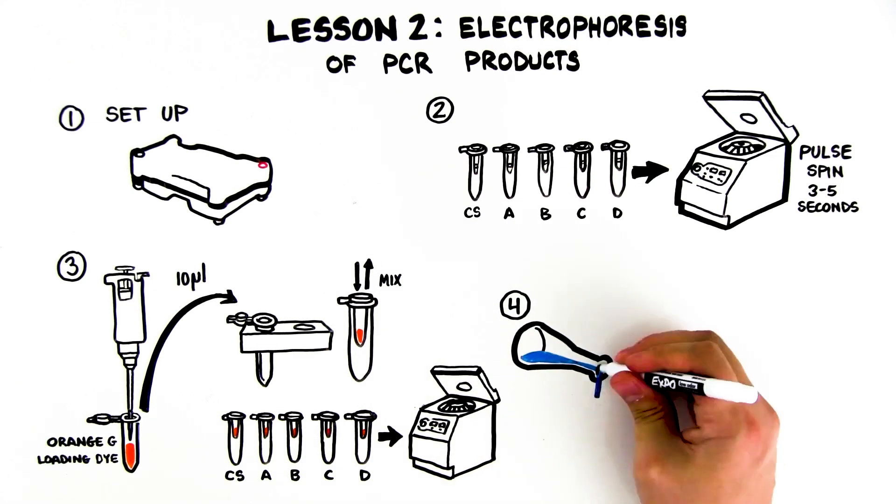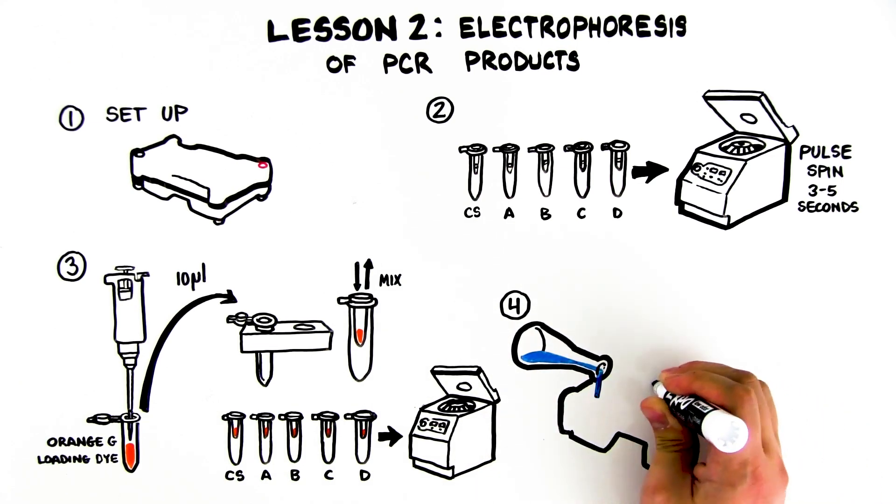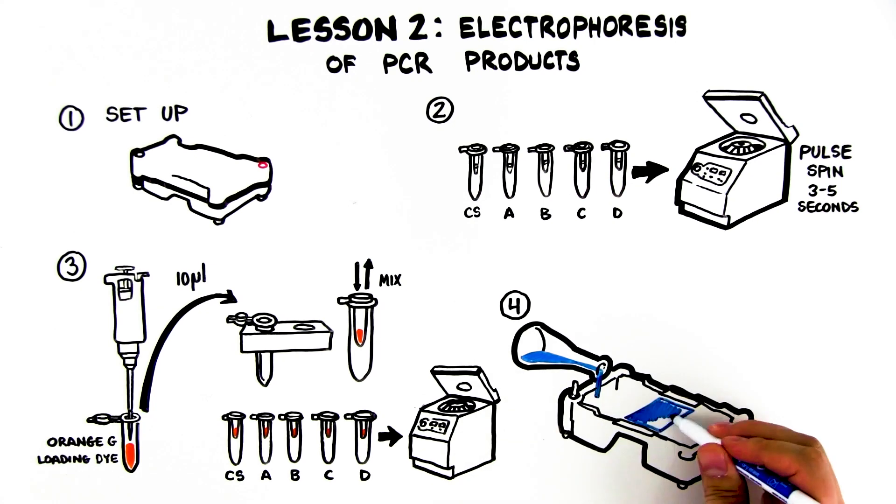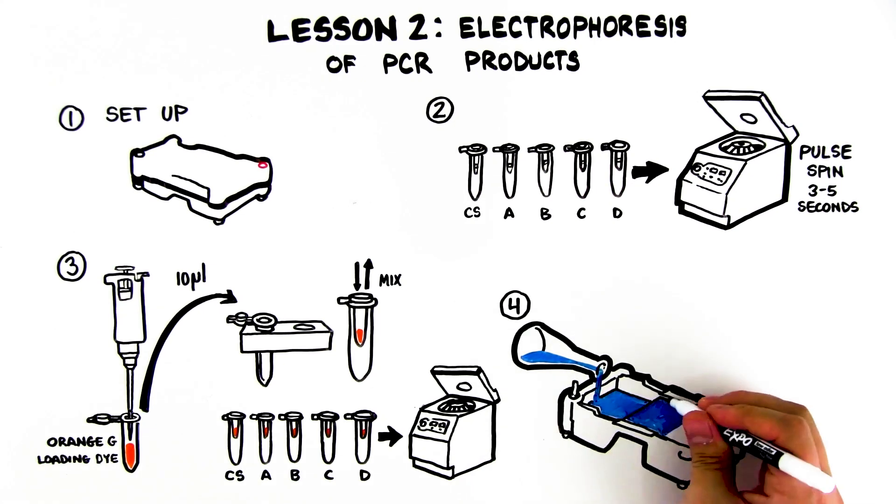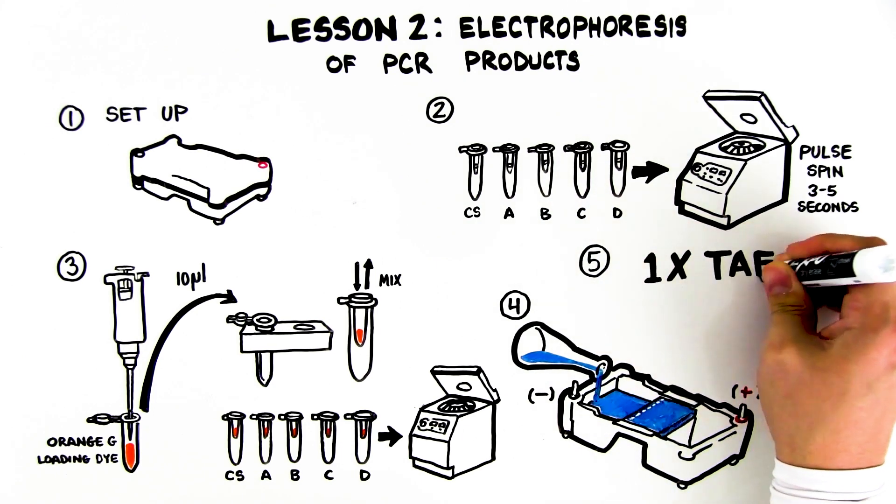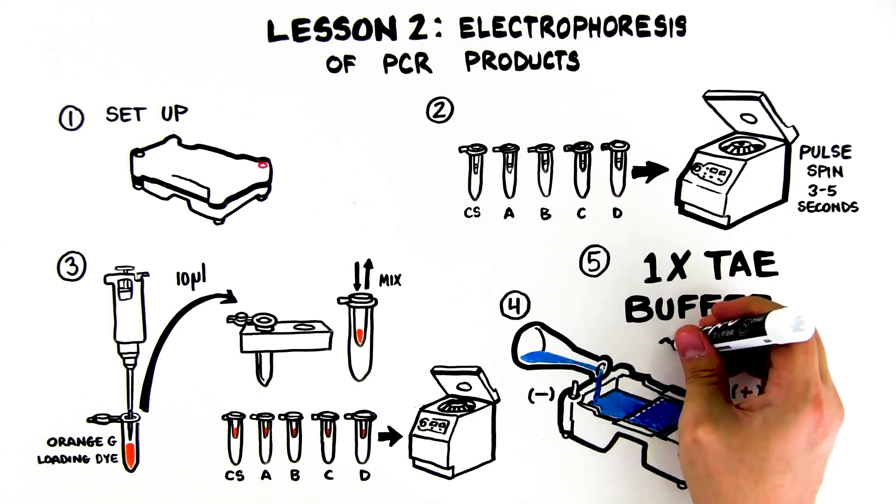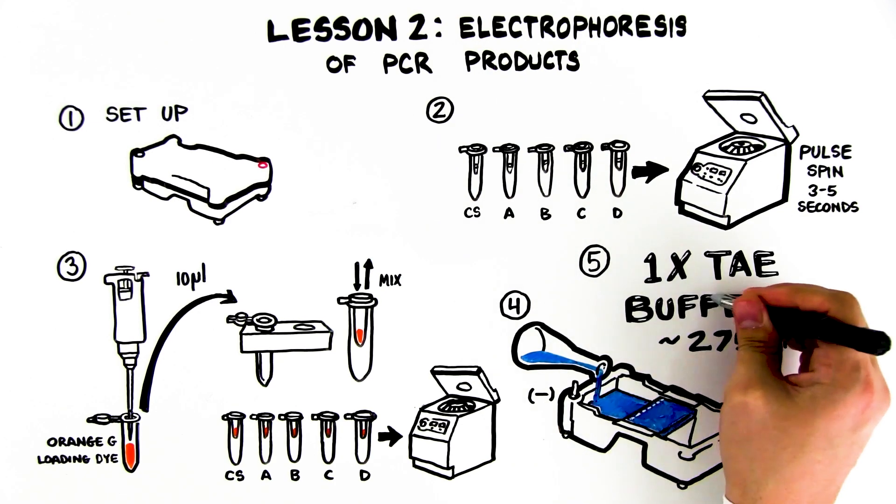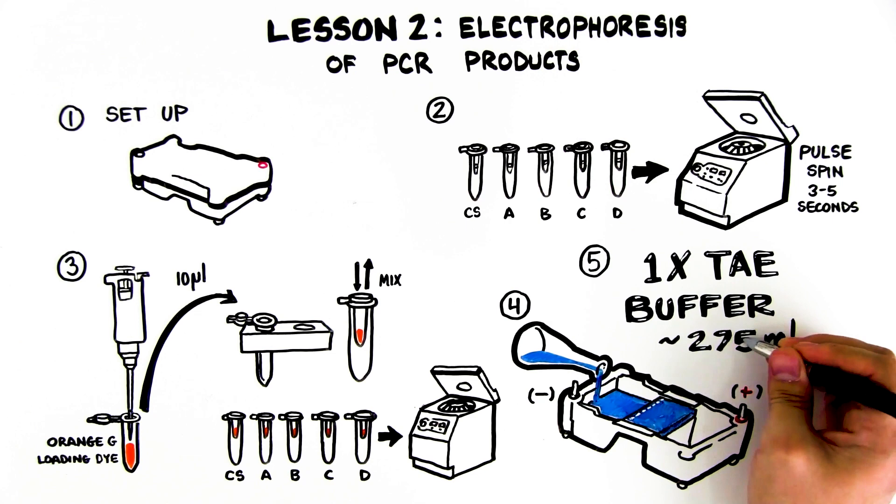Step 4: Place an agarose gel in the electrophoresis apparatus. Check that the wells of the agarose gel are near the black negative electrode and the base of the gel is near the red positive electrode. Step 5: Fill the electrophoresis chamber with enough 1X TAE buffer to cover the gel. This will require approximately 275 mL of 1X TAE buffer.